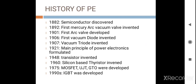If we talk about the history of power electronics, the first power semiconductor device was discovered in 1882. After that, the first mercury arc was invented, and later on, the first arc valve was developed. Then the first vacuum diode was invented in 1906, and another vacuum diode in 1907. After that, the main principles of power electronics and the transistor were invented. In 1960, the first silicon-based thyristor was invented.